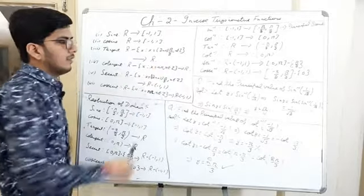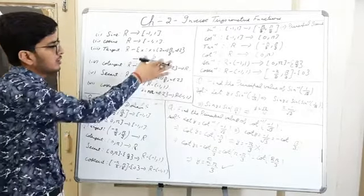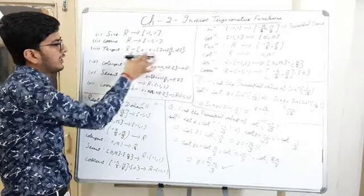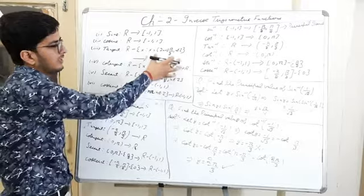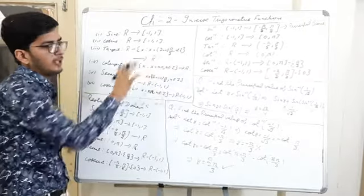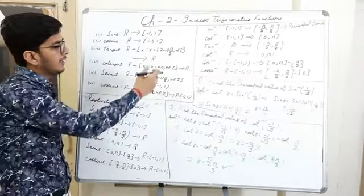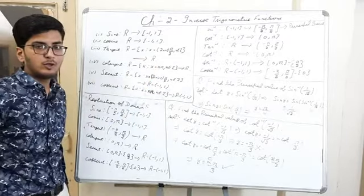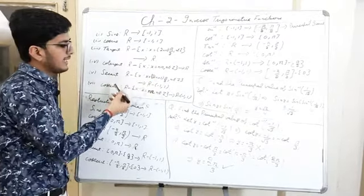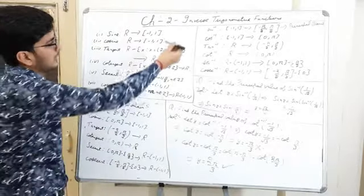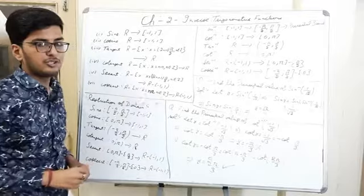Why are those points excluded from the domain of tangent? Because at all those points, tangent is not defined. So if tangent is not defined there, those points will not come in the domain — that's why they are excluded. The co-domain of tangent is the set of real numbers. Similarly, cotangent, secant, and cosecant are defined. These are the six trigonometric functions.